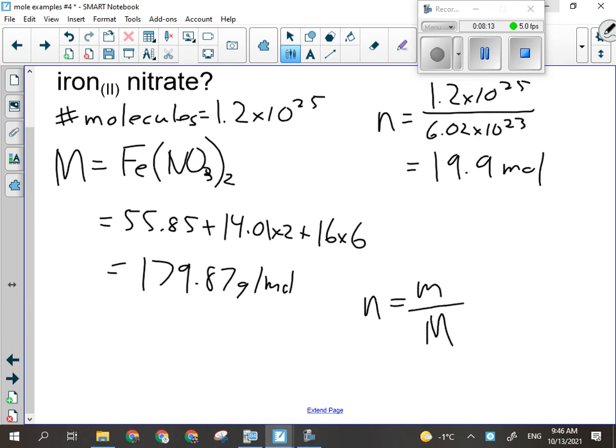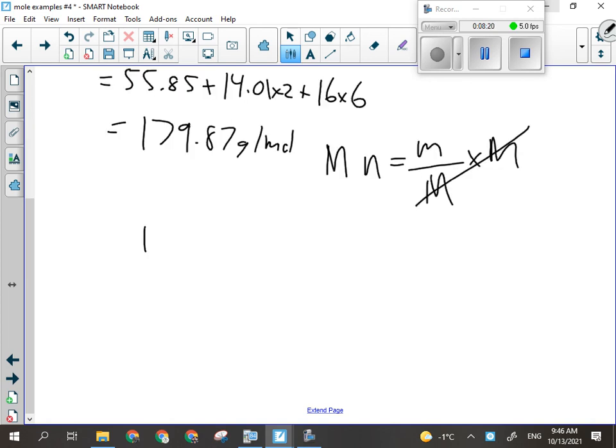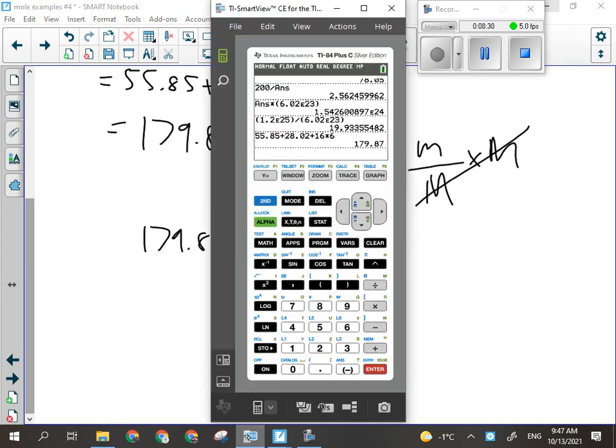All right, so I have big M, I already calculated n, so now I can find little m. And I would do that by multiplying both sides by big M, which will look like this: 179.87 multiplied by 19.9. In my calculator I'm keeping all of the decimals, so I'll have my answer. 179.87, and I want to multiply it by that number with all the decimals in it. I am going to have 3585.45 grams.